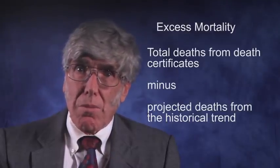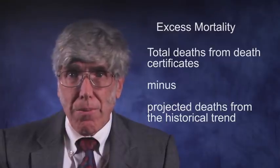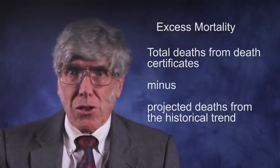It is simply the arithmetic difference of two numbers: total deaths from death certificates minus projected deaths from the historical trend. This method assumes one fact to be true that most people are willing to accept: all death certificates represent real deaths, irrespective of the cause. The normal death rate without a pandemic for an entire nation like the USA does not vary by much more than 1% from year to year.